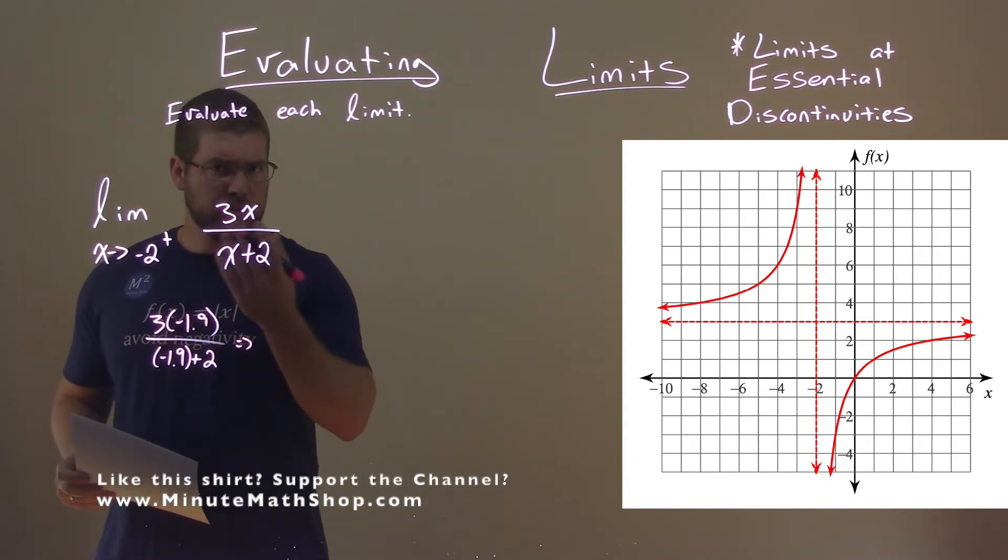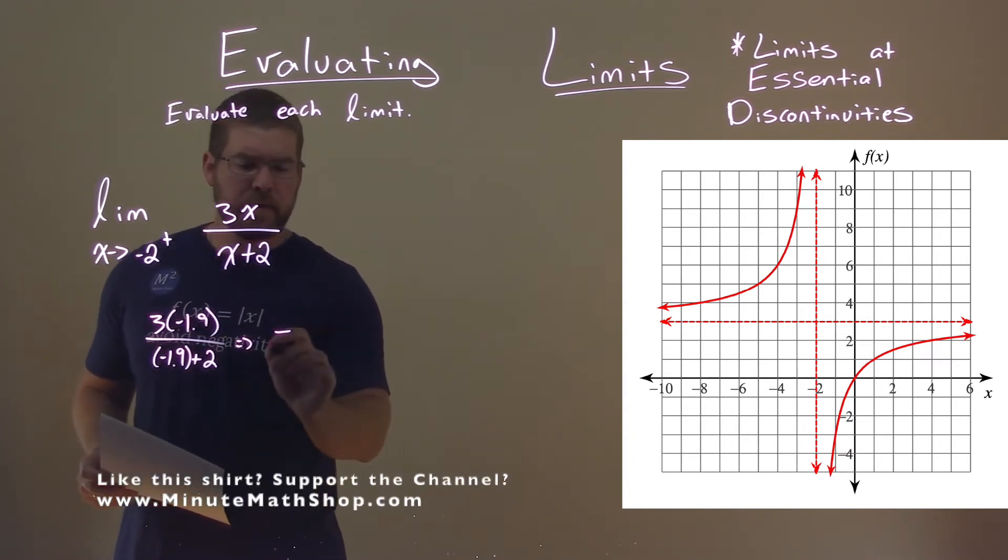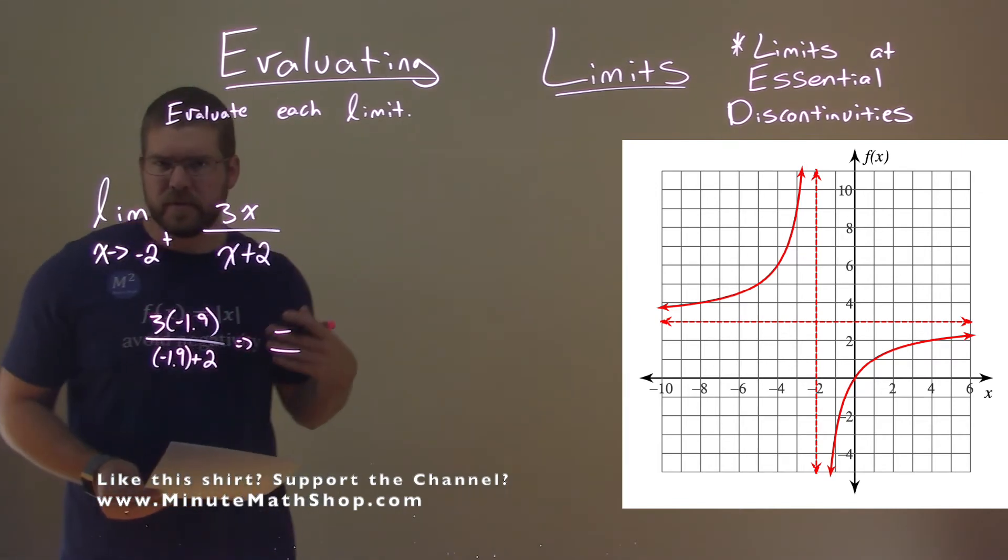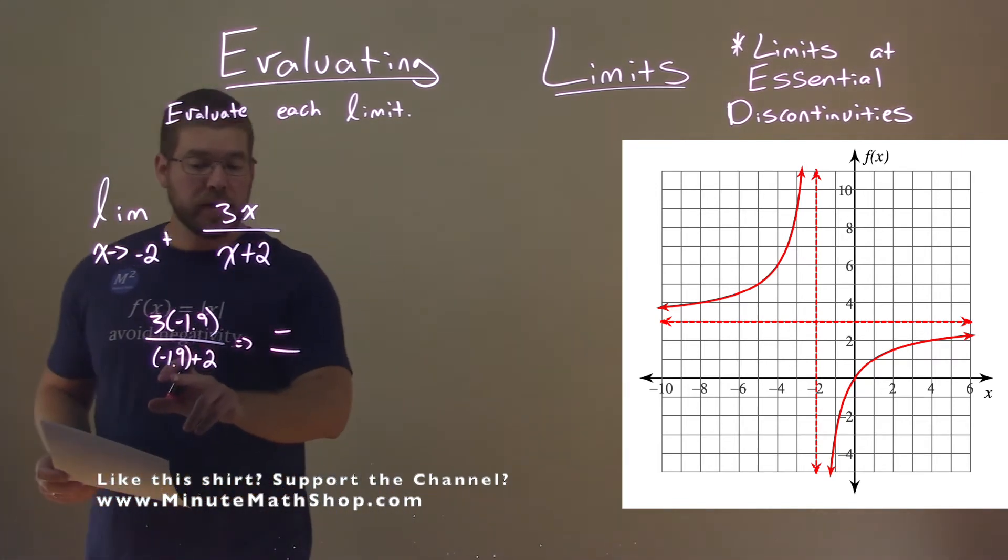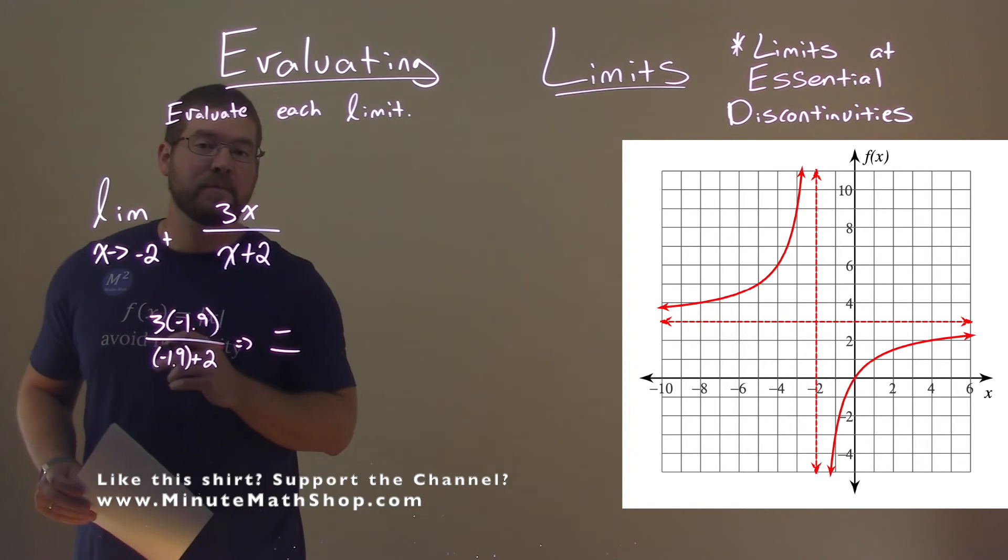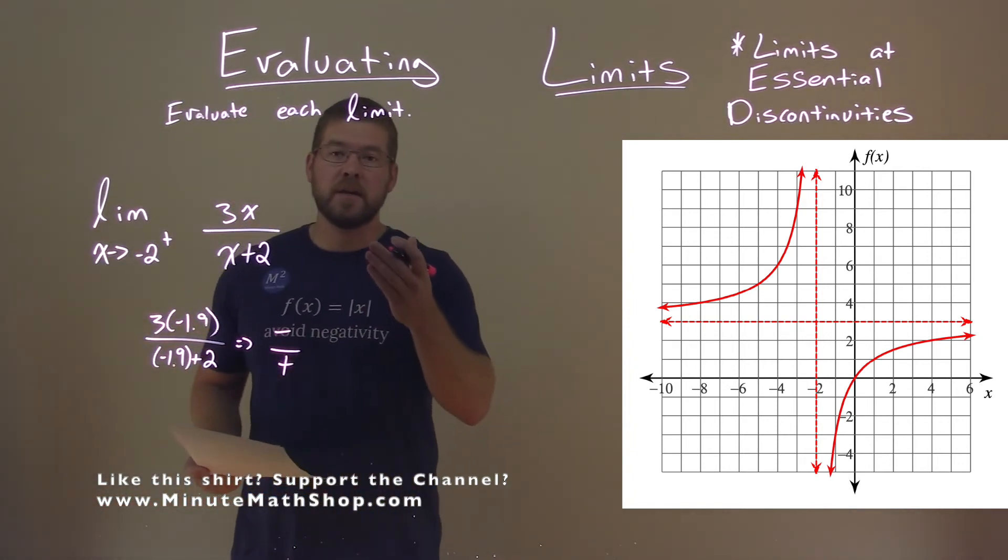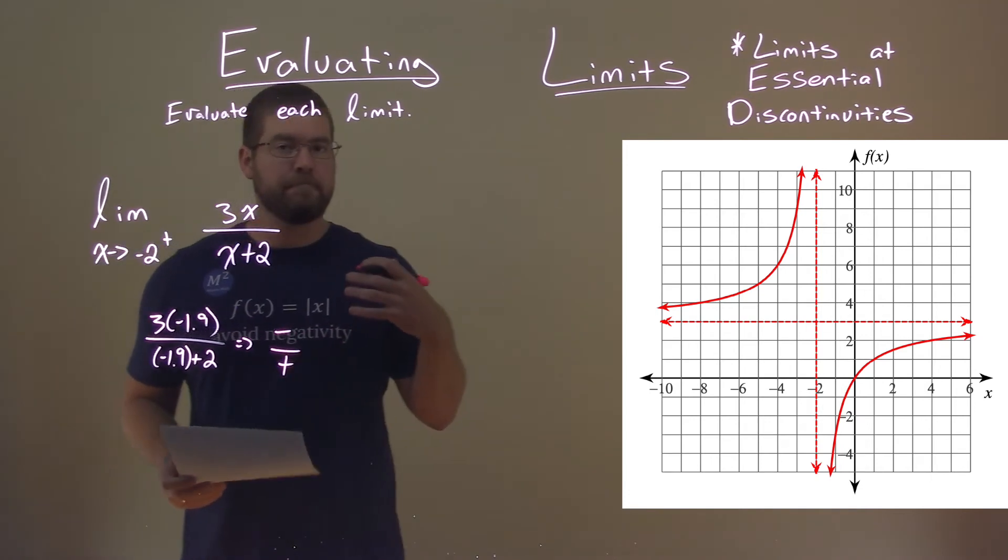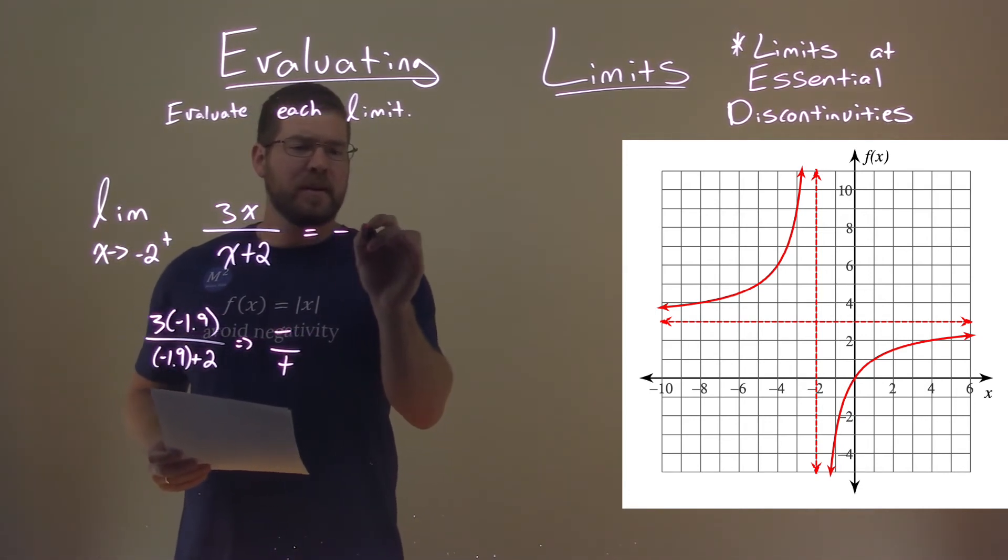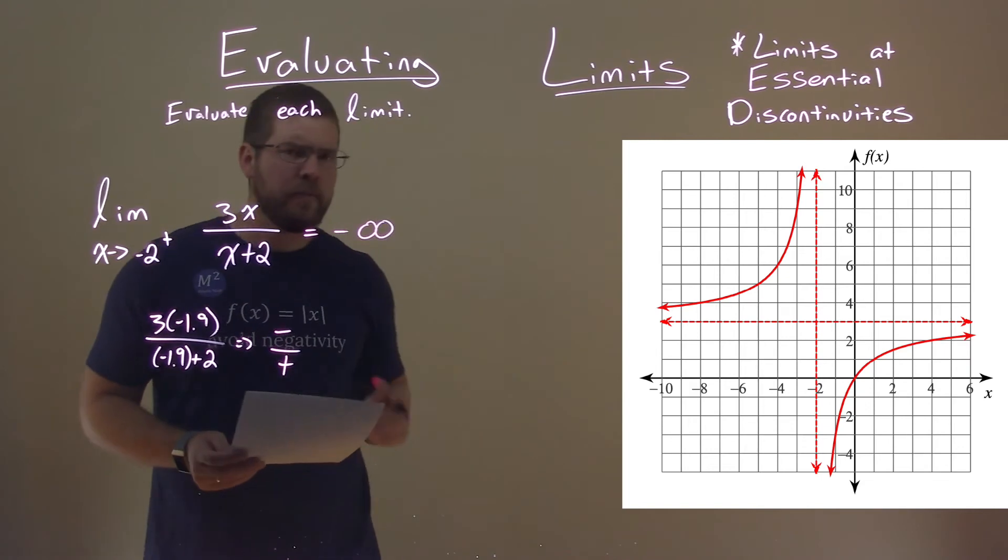So the numerator is clearly going to be a negative. Negative 1.9 times 3 is a negative number. The denominator is going to be a small number, but it's still positive. So what happens when we have a negative over a positive number? It's going to be negative. And so we would say that this limit is approaching negative infinity.